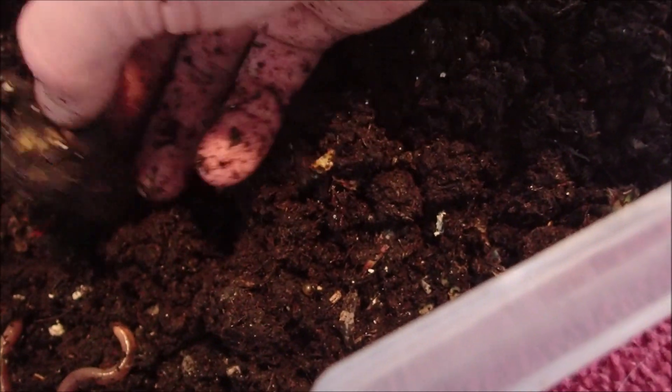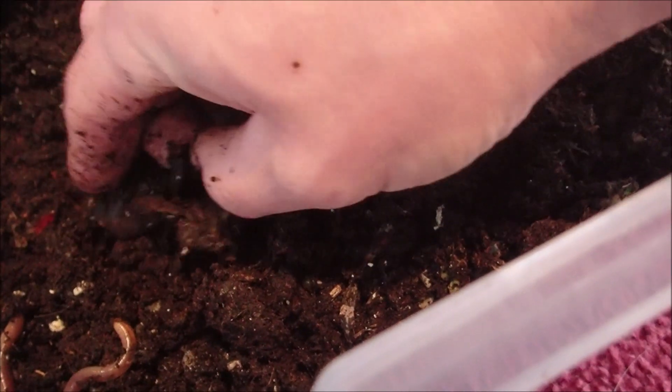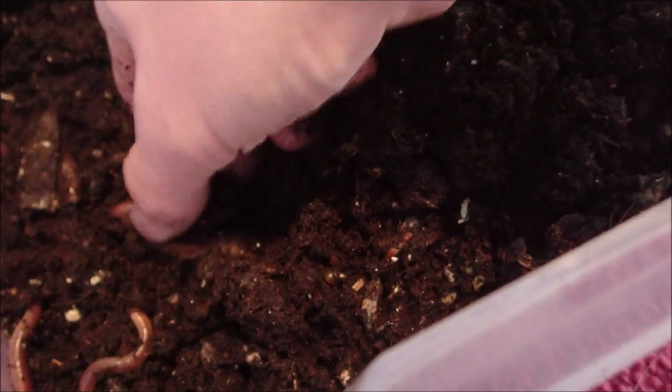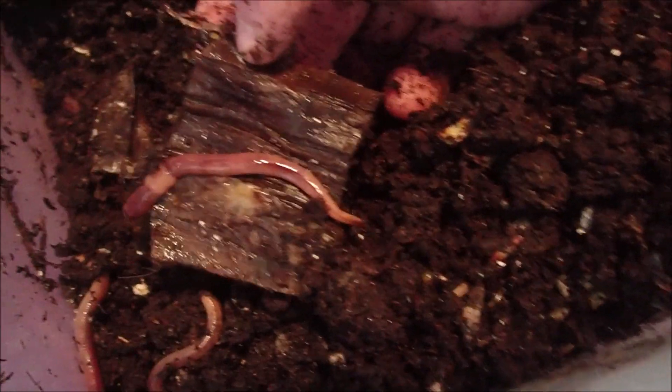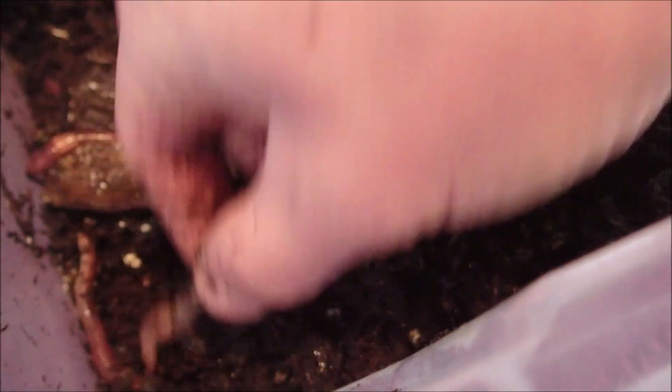There's two matures. There's a little one in that banana. Let's try to break that open. All right, so there's another mature in the banana. So there's three. So we know we got three in there still.